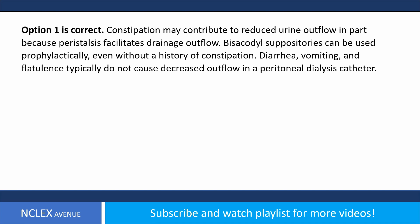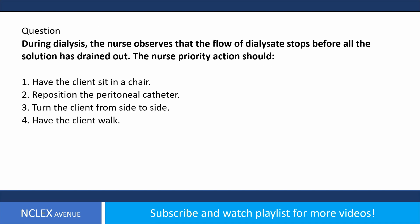Answer: option one is correct. Constipation may contribute to reduced dialysate outflow, in part because peristalsis facilitates drainage outflow. Bicyclyl suppositories can be used prophylactically even without a history of constipation. Diarrhea, vomiting, and flatulence typically do not cause decreased outflow in a peritoneal dialysis catheter.